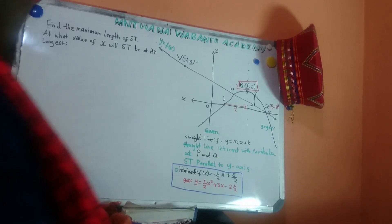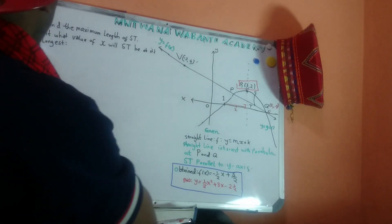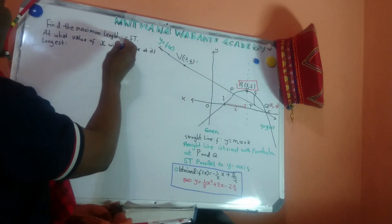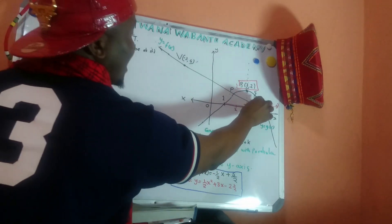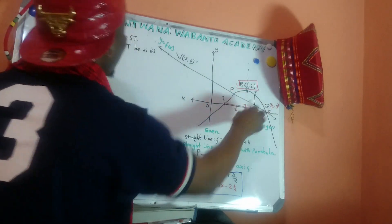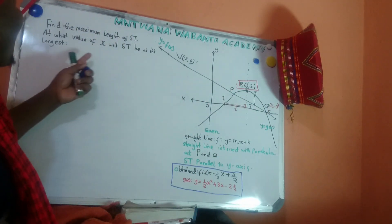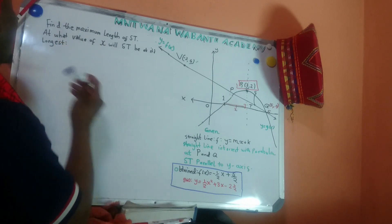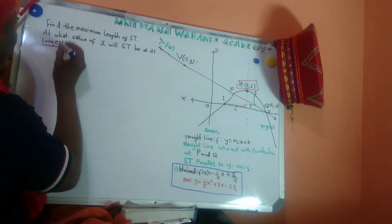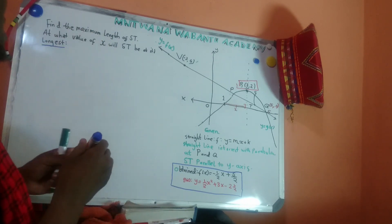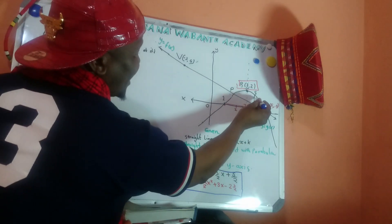This is the easiest part. The question says find the maximum length of HT - what is the maximum of HT, and at what value of X will HT be the longest? Look here: HT is the distance or length between the parabola and the straight line.